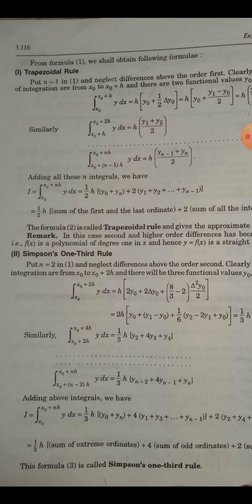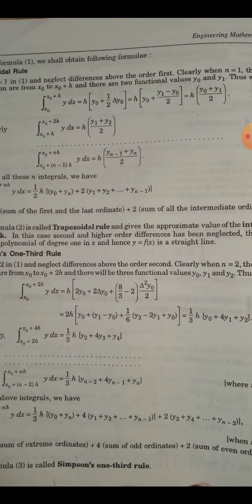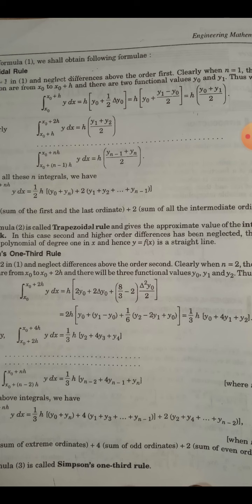For next interval, lower limit X_0 plus H and upper limit X_0 plus 2H, second subdivision Y dX equals, and value will be H (y_1 plus y_2) upon 2, just similar of first term.